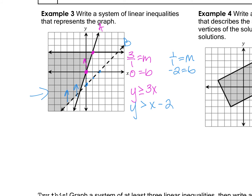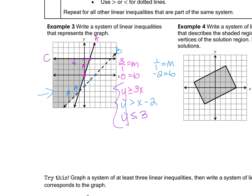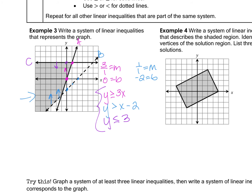The last line is a straight horizontal line crossing the y-axis at 3, so it has no x variable. It's solid and must be shaded below, giving y ≤ 3. Those three inequalities form the system for this graph.